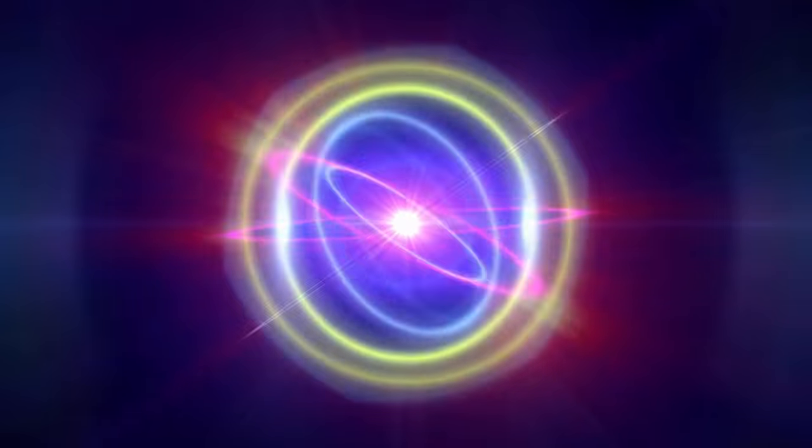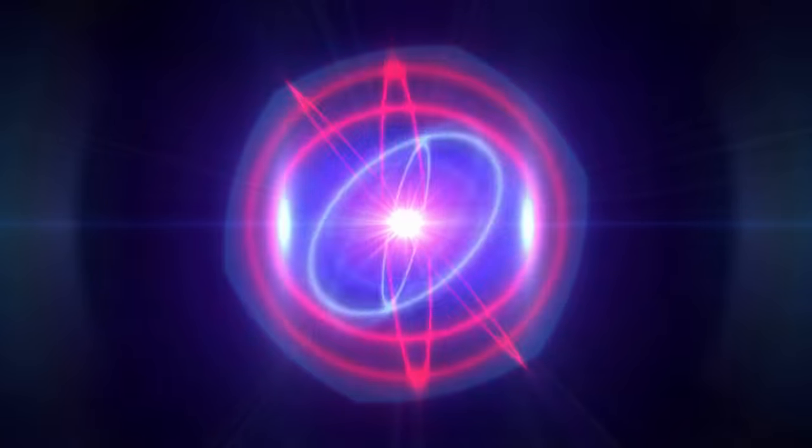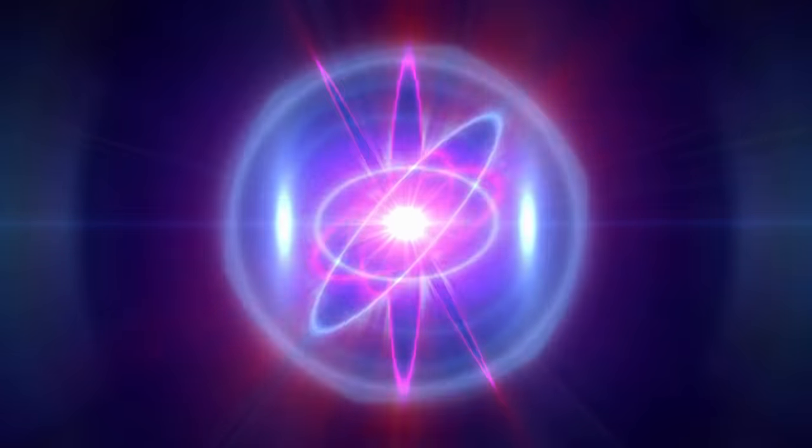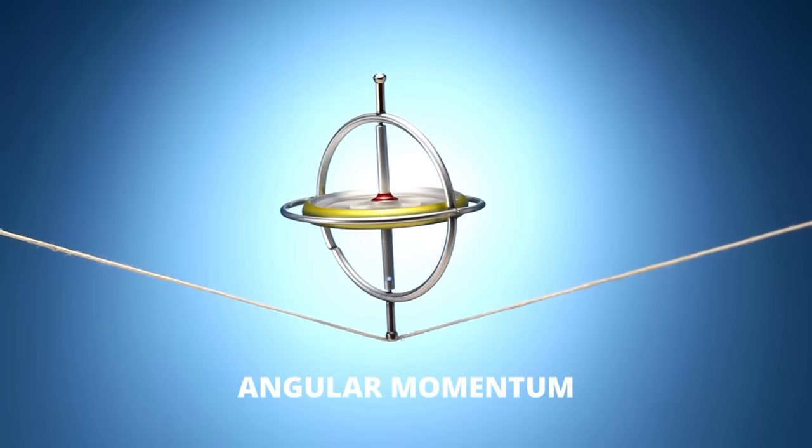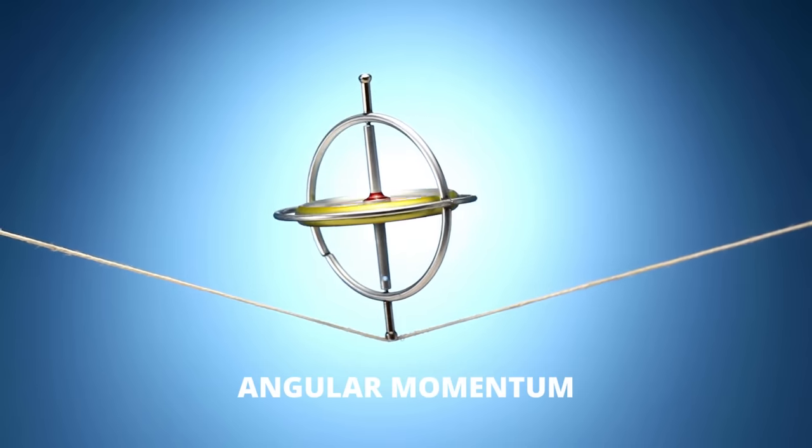Therefore, an electron bound to a nucleus can only exist in certain allowed energy states. These energy states are related to other properties, such as angular momentum.